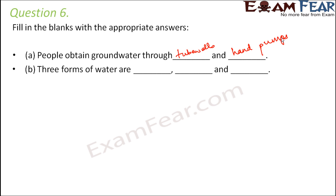The three forms of water are solid, liquid, and gas. Water exists in all three forms. An example of solid water is ice, liquid water is water in its liquid form, and the gaseous form of water is water vapor.